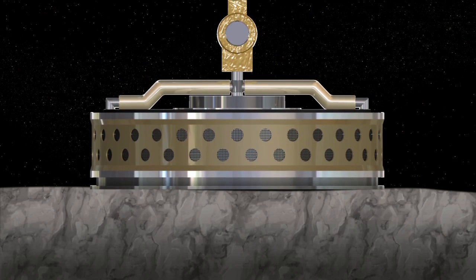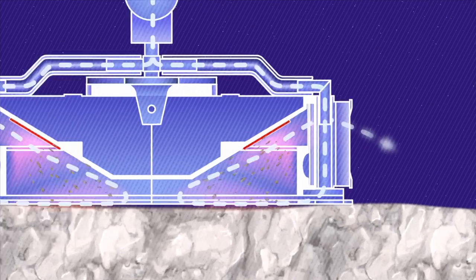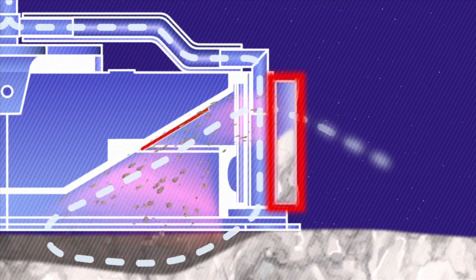When the TAGSAM touches the surface, it will release a burst of nitrogen gas, causing loose rocks and soil to flow into the collector.